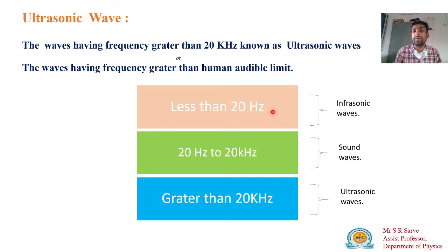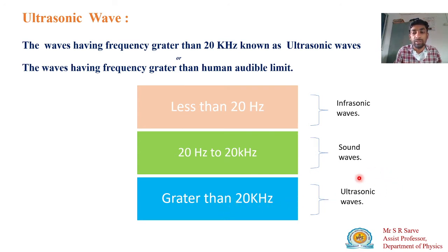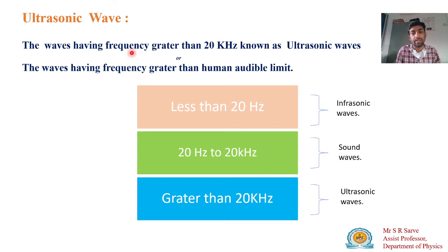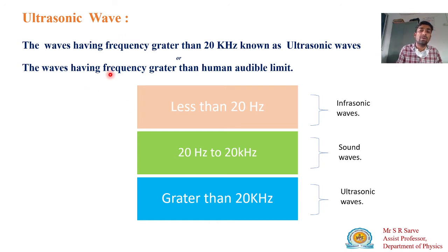If the frequency of the sound is less than 20 hertz, it is inaudible to the human ear and those waves are known as infrasonic waves. And if the sound wave has a frequency greater than 20 kilohertz — greater than the human audible range of 20 hertz to 20 kilohertz — then that sound wave is known as an ultrasonic wave.